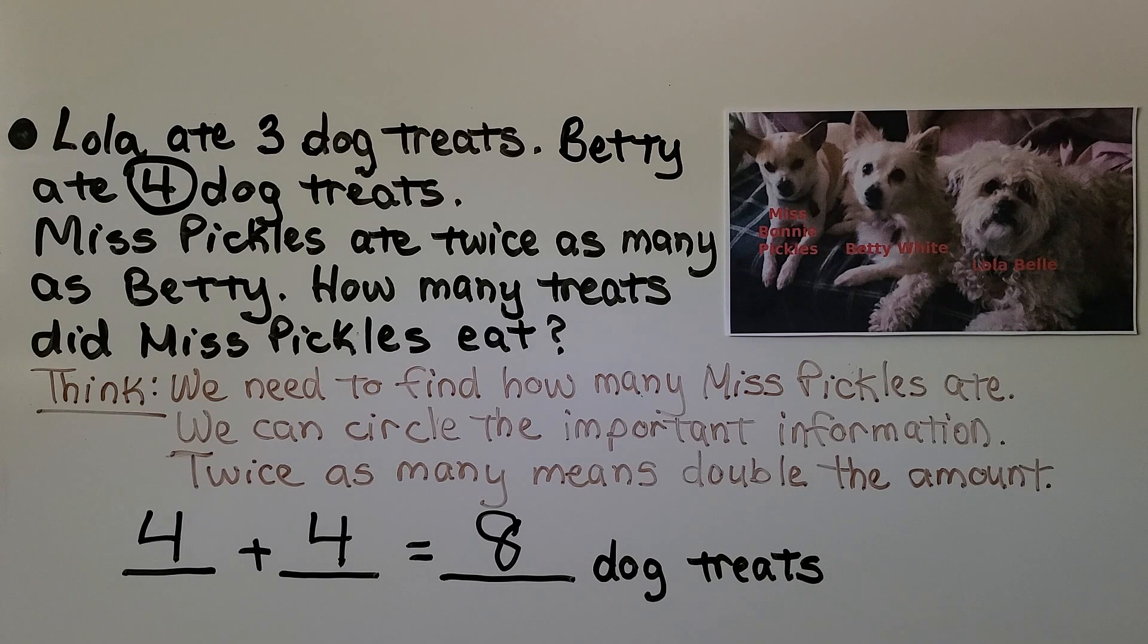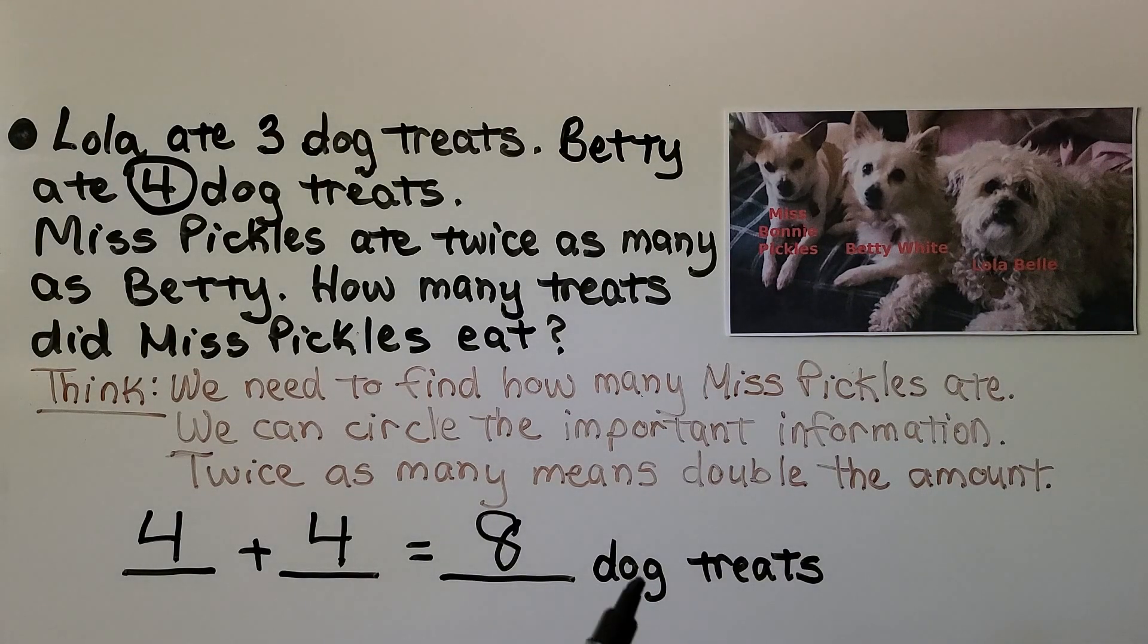We need to be careful because sometimes in word problems there'll be information that's not important like Lola ate 3 dog treats. We didn't need that to solve the problem. We make sure we label 8 dog treats so we know what we were counting.